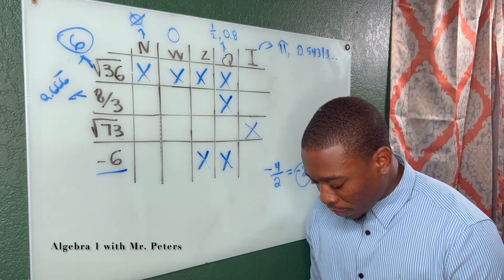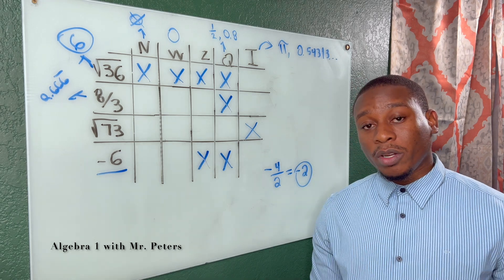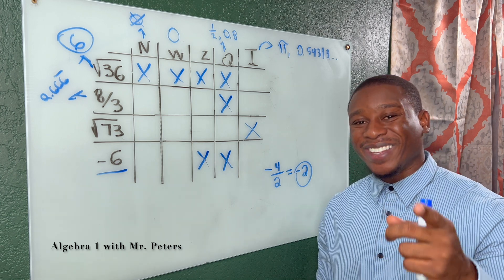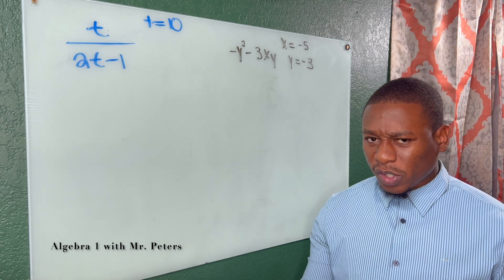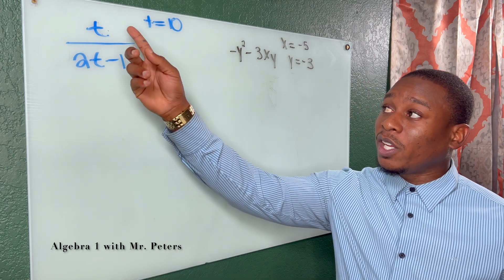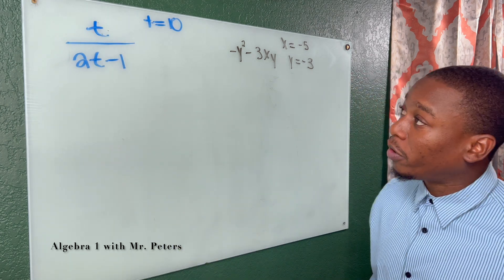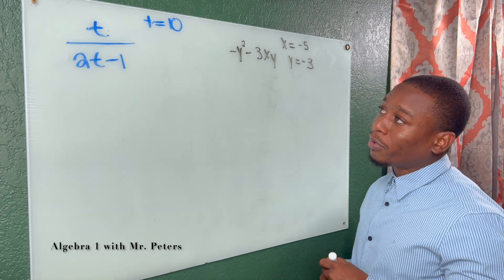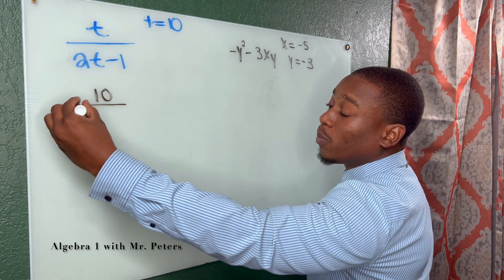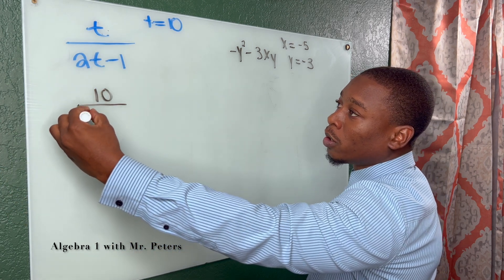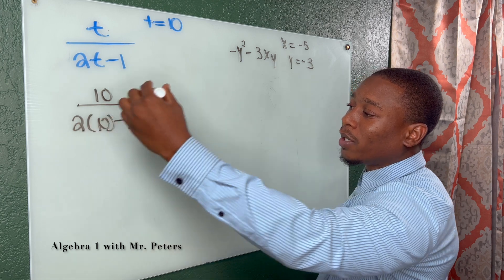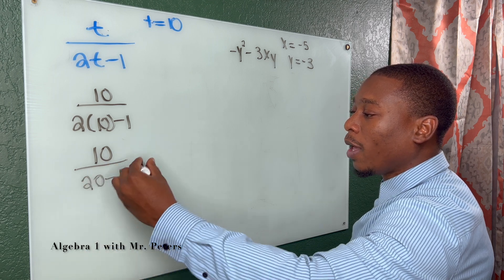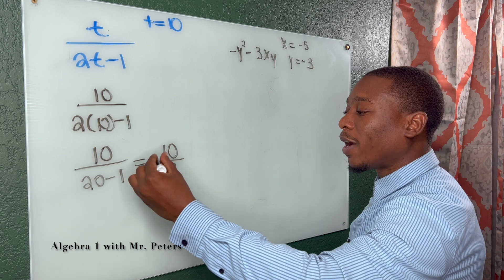The last concept: we're focusing on how to evaluate expressions. They give us an expression and tell us the number values for the variable. In problem number one, t equals 10. We substitute first: 10 divided by 2 times 10 minus 1. When we simplify, we get 10 over 20 minus 1, giving us 10 over 19 as a final answer.